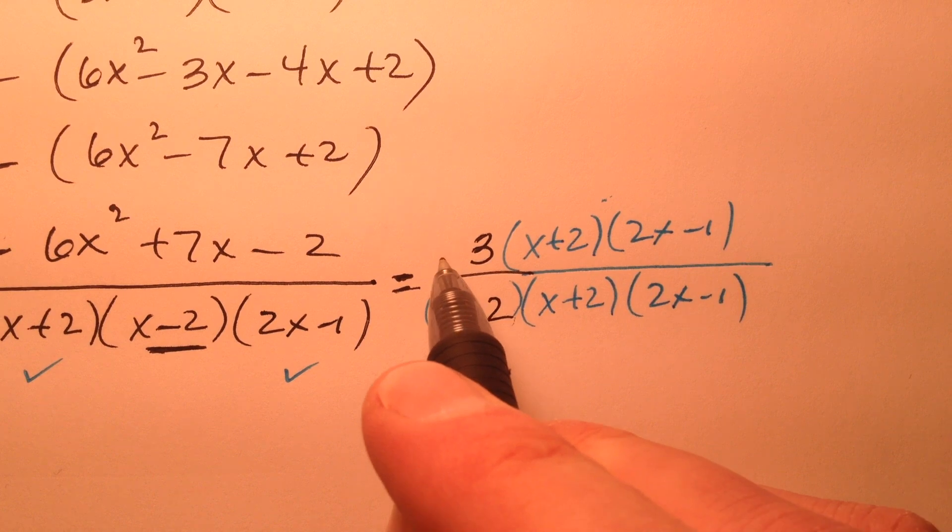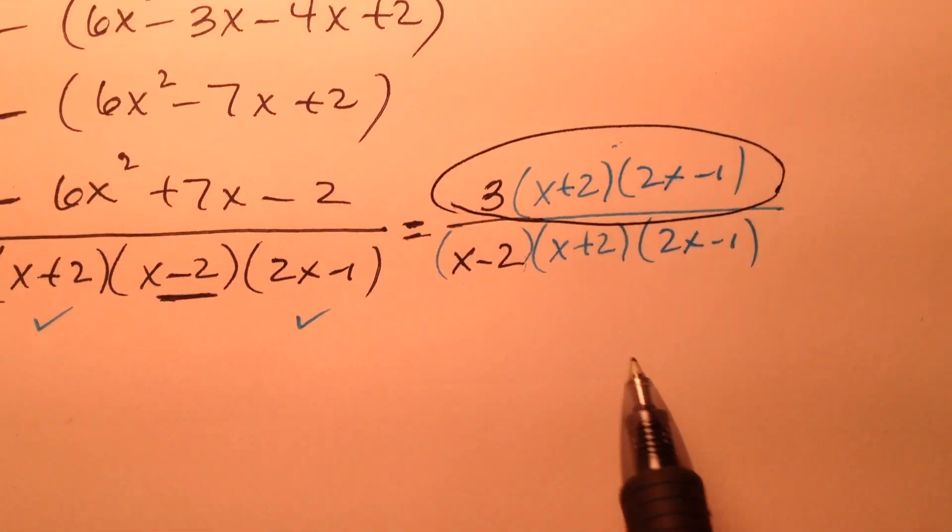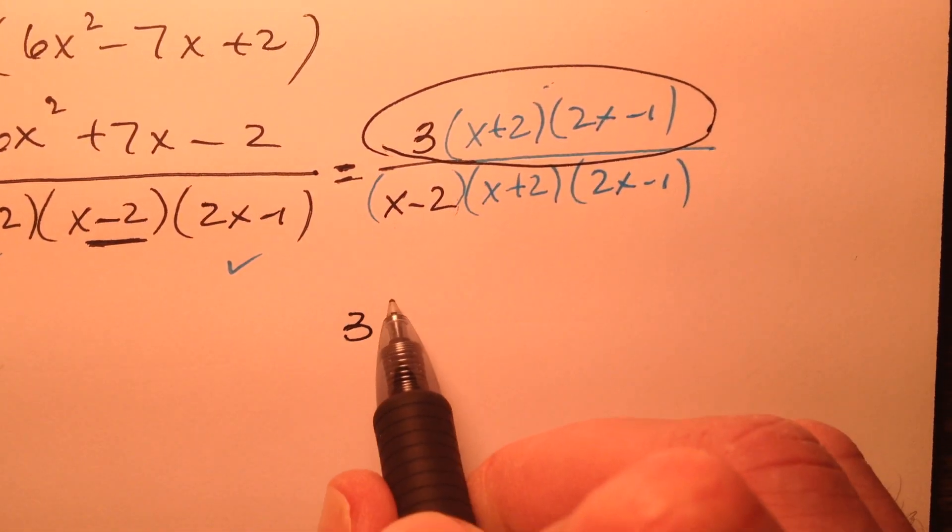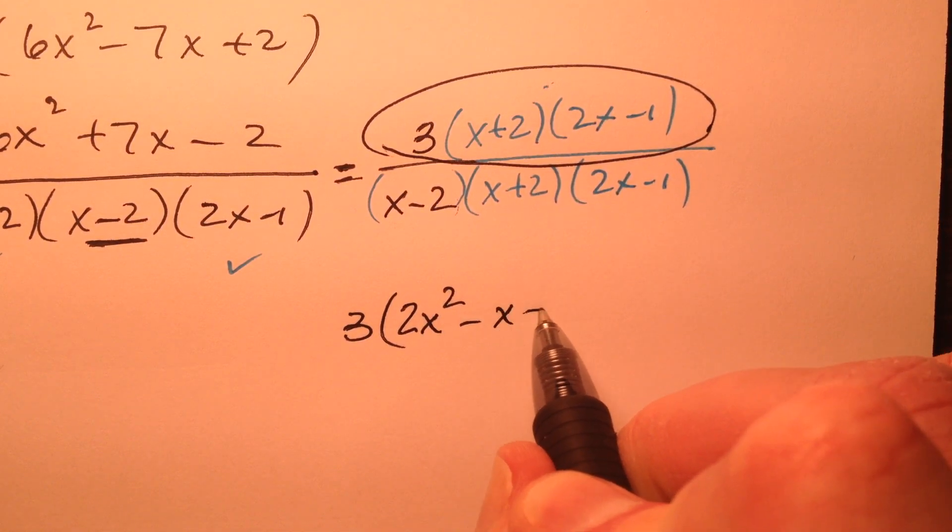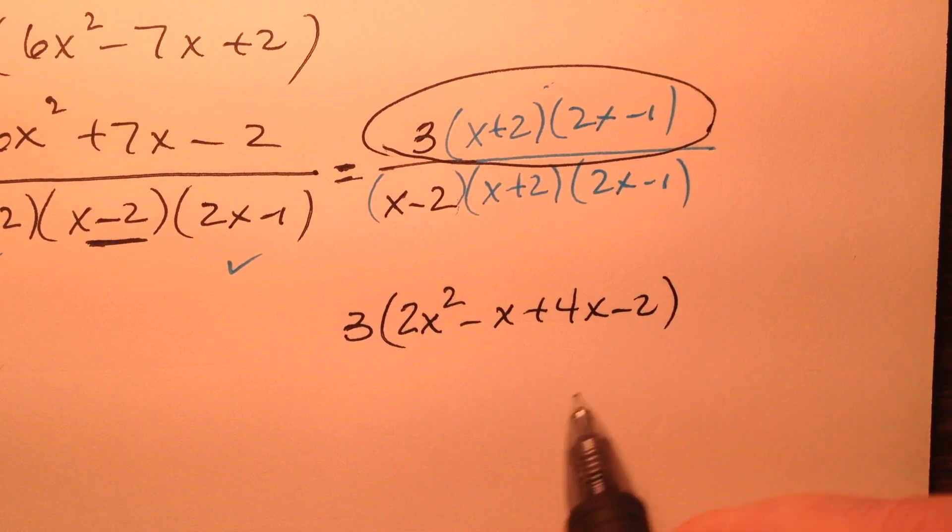So what would this numerator be? Well, 3 times, and let's multiply these together, so 2x squared minus x plus 4x minus 2.